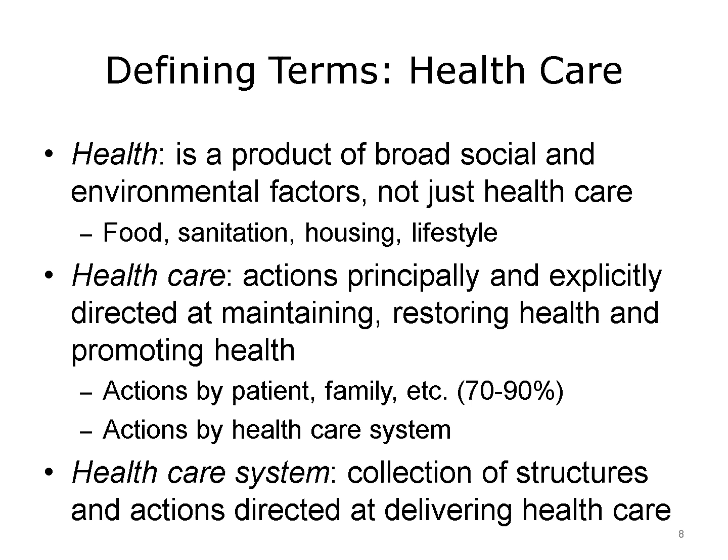Now that we understand a little more about health, disease, and illness, we can think about what we mean by health care. When we look at health in the broadest sense, it's not just the result of health care or a health care system — it's the product of broader cultural and social factors. For example, think of the effects of food, sanitation, and housing, and how these have impacted our life expectancy and quality of life in the last century or so. Furthermore, if we think of health care as actions principally and explicitly directed at maintaining or restoring health, it's still true that most health care happens outside of the health care system, with actions taken by the patient, by family members, or by caregivers constituting between 70% and 90% of the health care that people receive.